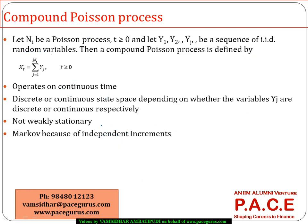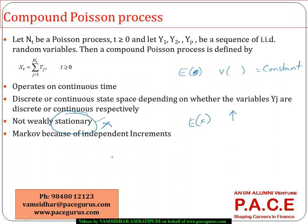Regarding properties, specifically stationarity: as per the definition of weak stationarity, we need the expected value and variance to be constant. In this case, that cannot be possible, because the expected value of the total claim amount keeps growing as more and more new claims come up. Because the expected value is not constant over a period, the compound Poisson process is not even weakly stationary. So it does not exhibit any kind of stationarity.